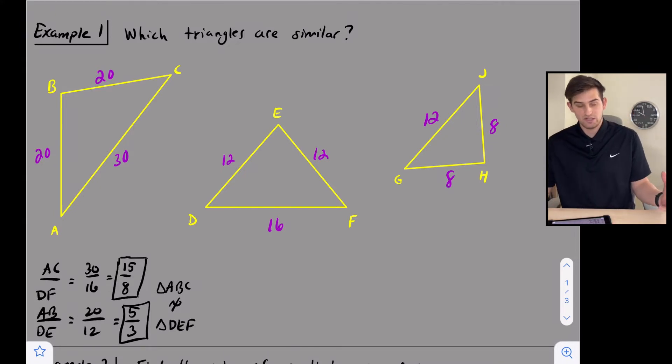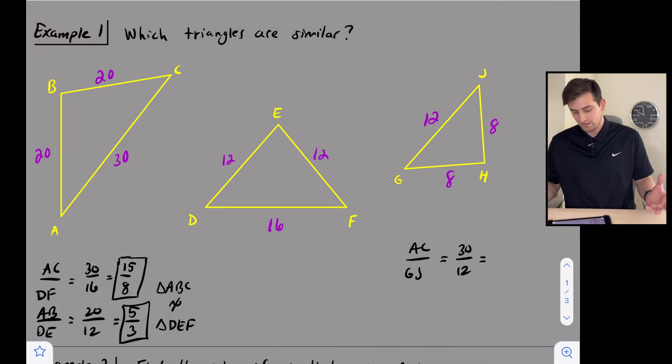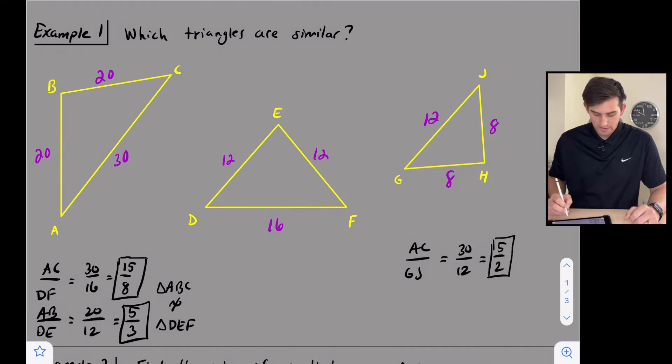Now let's try ABC and GHJ. So let's do the longest side. Let's do AC over GJ. So we get 30 over 12. And now here, let's reduce by 6, so we get 5 over 2 for our ratio. So now let's do 20 over 8. Let's do side AB from our larger triangle and side, let's do GH.